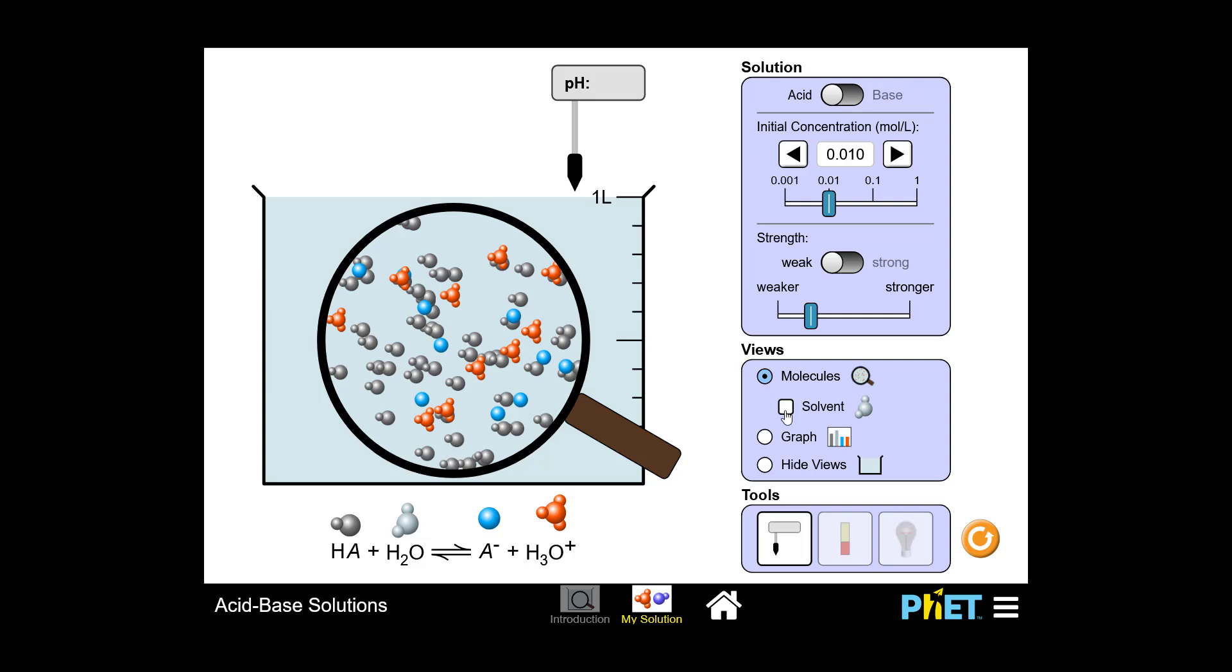You can turn on the H2O molecules, or the view of them, by clicking here on the right hand side. Now let's unclick that again for clarity's sake.